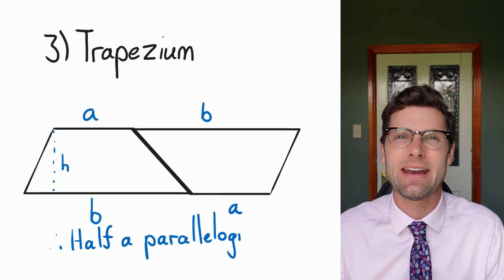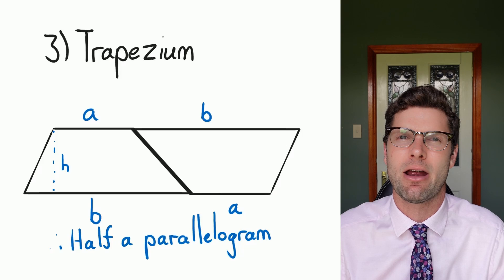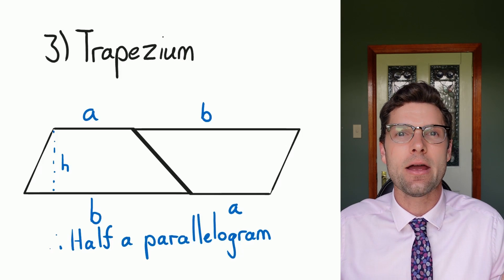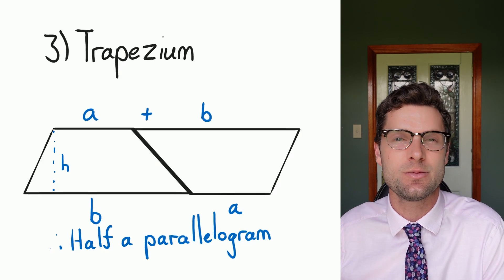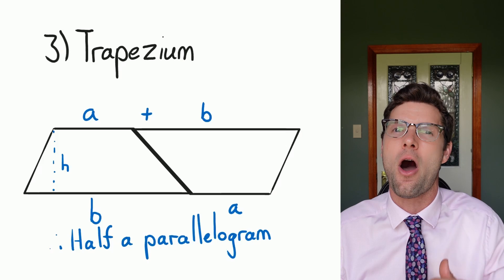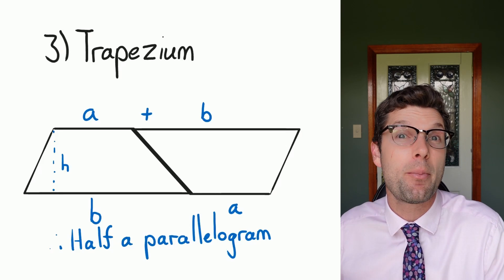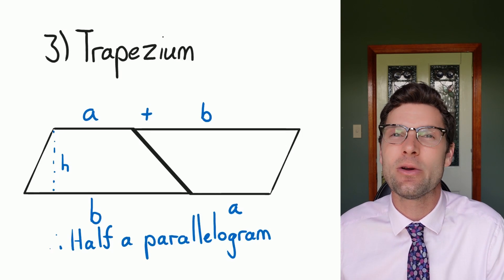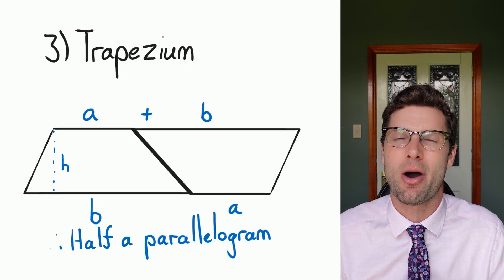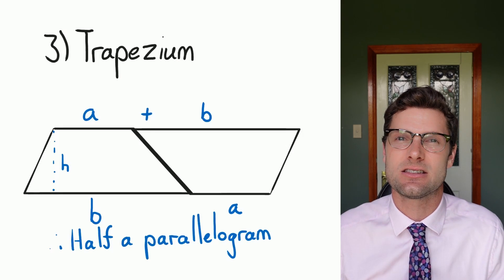So now all I need to know is, hey, what was that formula for the parallelogram? Oh, it was the entire base, for this it's A plus B, multiplied by the height up, H. But because we're only looking at one of these trapeziums, we just have to again, multiply it by a half. And that gives us the formula.